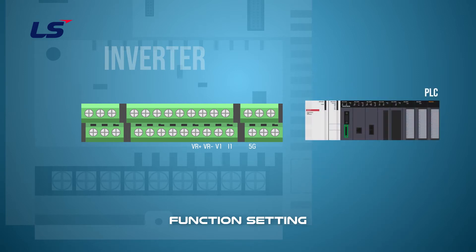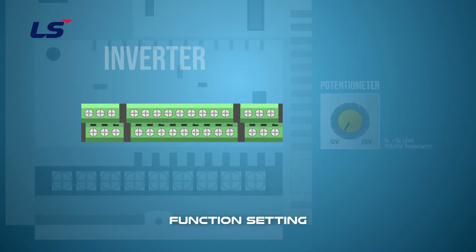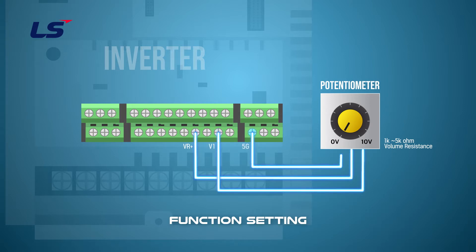When entering output voltage of external device, you wire the V1 and 5G terminals, or I1 and 5G terminals properly, to drive's terminals as mentioned above. When using drive's internal power source, you can wire a potential meter of 1K to 5K ohm to VR plus, V1, and 5G.